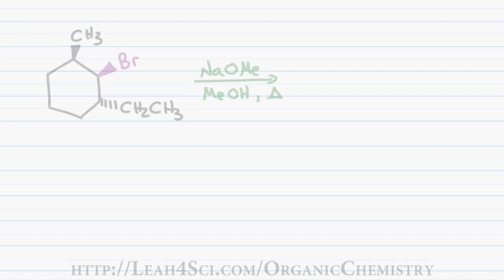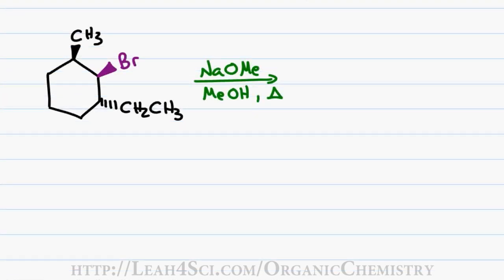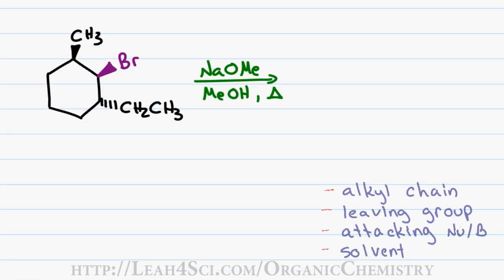E2 reactions get a little trickier when you're dealing with a cyclohexane because not only do you have to ensure that you have your four-part checklist, but you also have to make sure that the hydrogen and leaving group are in the anti-coplanar positions. We'll use this example where we have a cyclohexane that has a bromine leaving group next to two tertiary carbons, one with a methyl and the other with an ethyl.